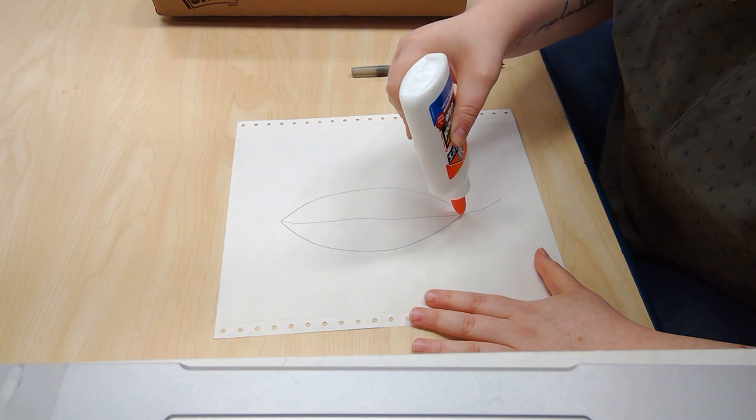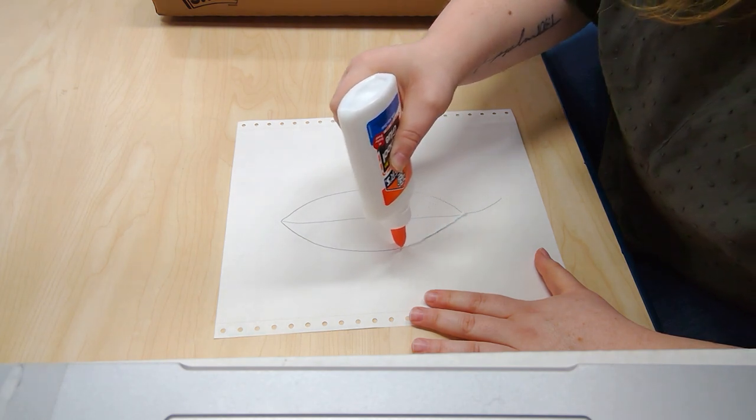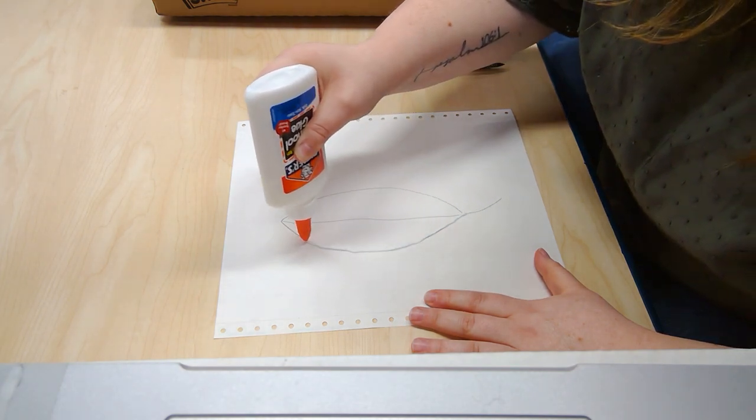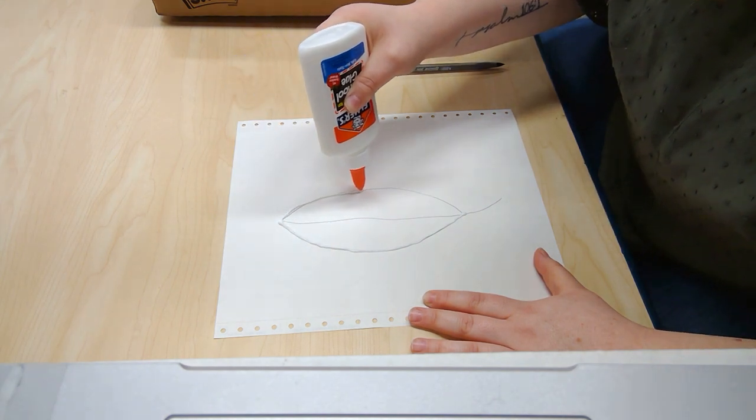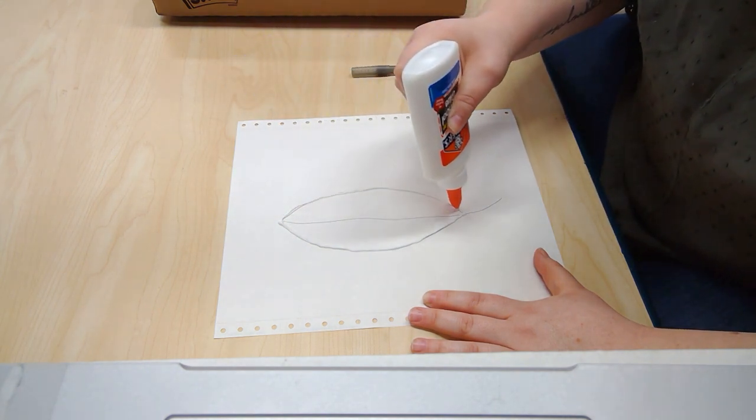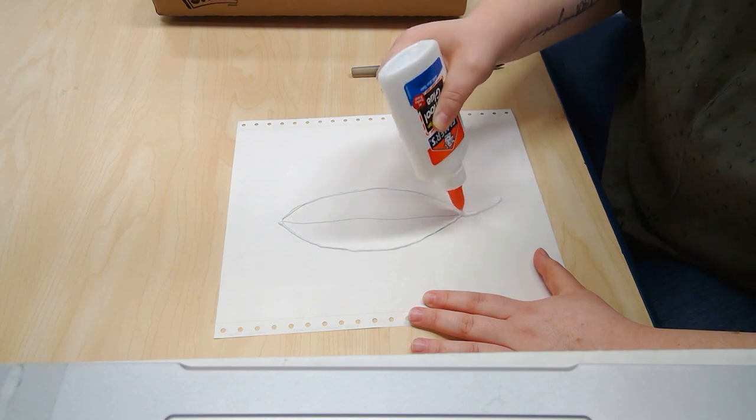And I'm going to go over the lines that I drew to make the shape of a leaf with my glue. It doesn't have to be perfect. This is just a guideline.